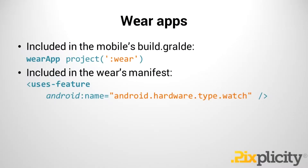Also make sure that your Wear manifest includes the uses-feature to target the Android hardware type of the watch. This is important to ensure that the Android device the APK is going to be installed on understands that this is an APK for Android Wear.